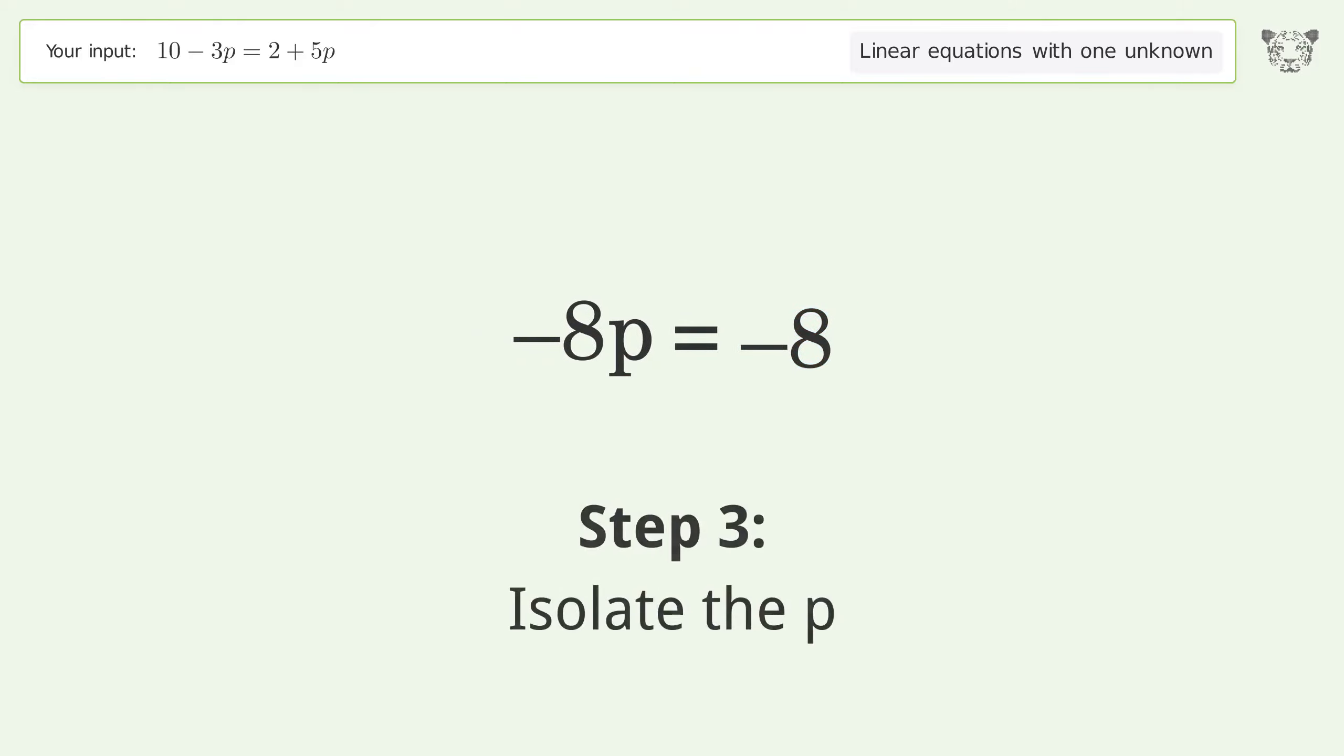Isolate the p. Divide both sides by negative 8. Cancel out the negatives.